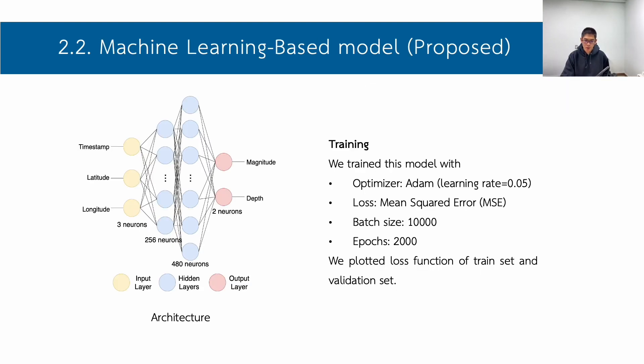For machine learning-based model, as you can see in the left side, we train this model with optimizer adam, with learning rate equal to 0.05. We use mean-square mse as loss function. We train this model with 8 batches, which each batch has 10,000 datas. We train this model with 2,000 epochs. Then we plot loss function of training set and validation set.